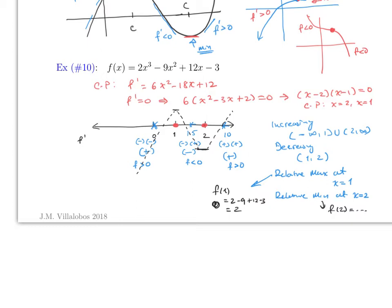To summarize: find the derivative, set it equal to zero or undefined to get critical points, then check the signs on either side. If it changes positive to negative — maximum. The positive intervals are where f is increasing, negative intervals are where f is decreasing. It's very simple.